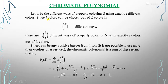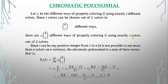If we choose i colors, the number of ways of selecting them from λ colors is λC_i (the combination function). So there are c_i multiplied by λC_i different ways of properly coloring G using exactly i colors out of λ colors. The total number of different ways for proper coloring is the sum of c_i × λC_i.